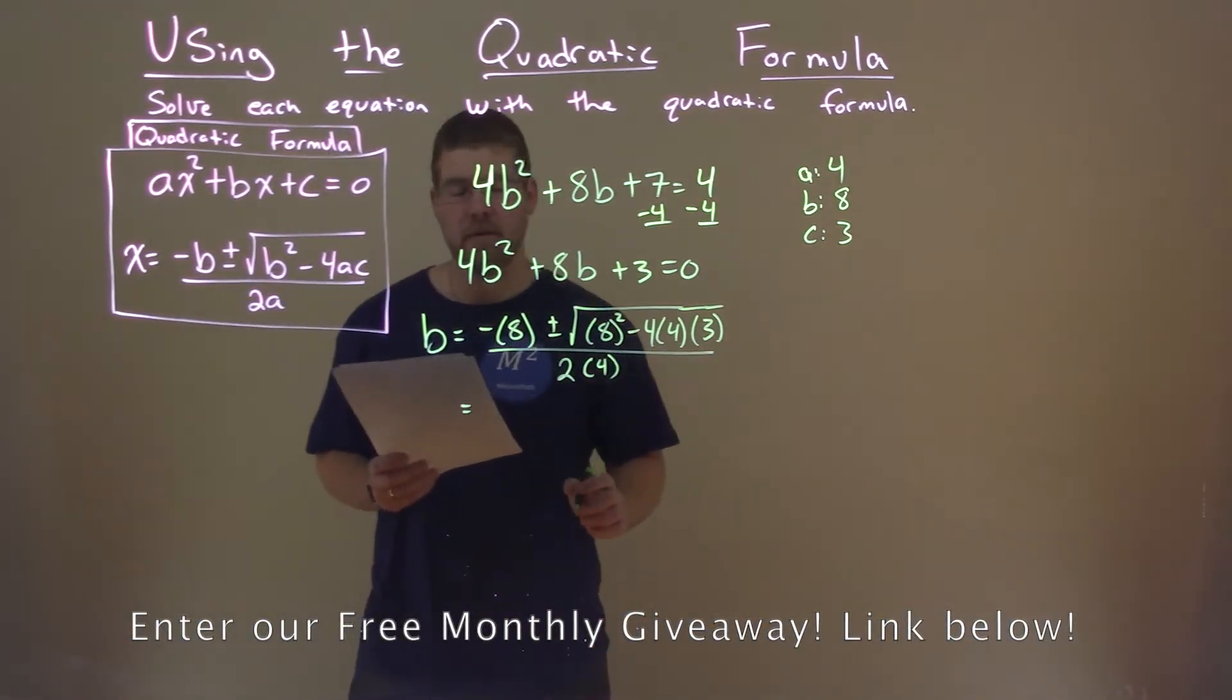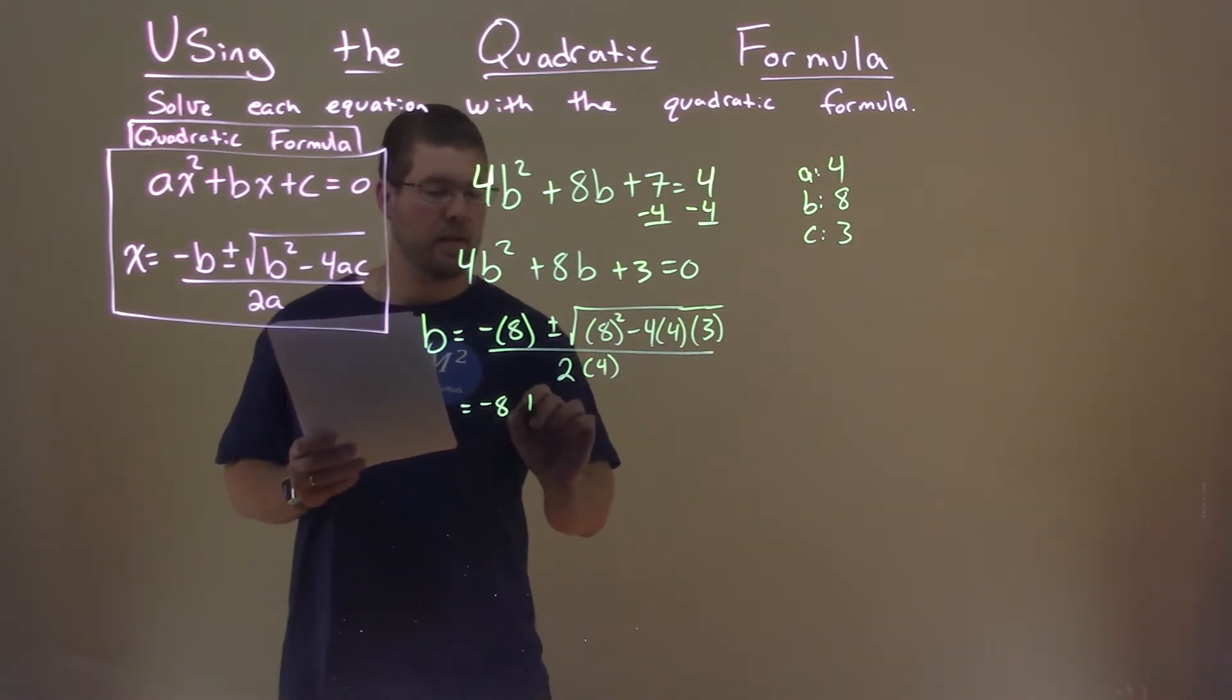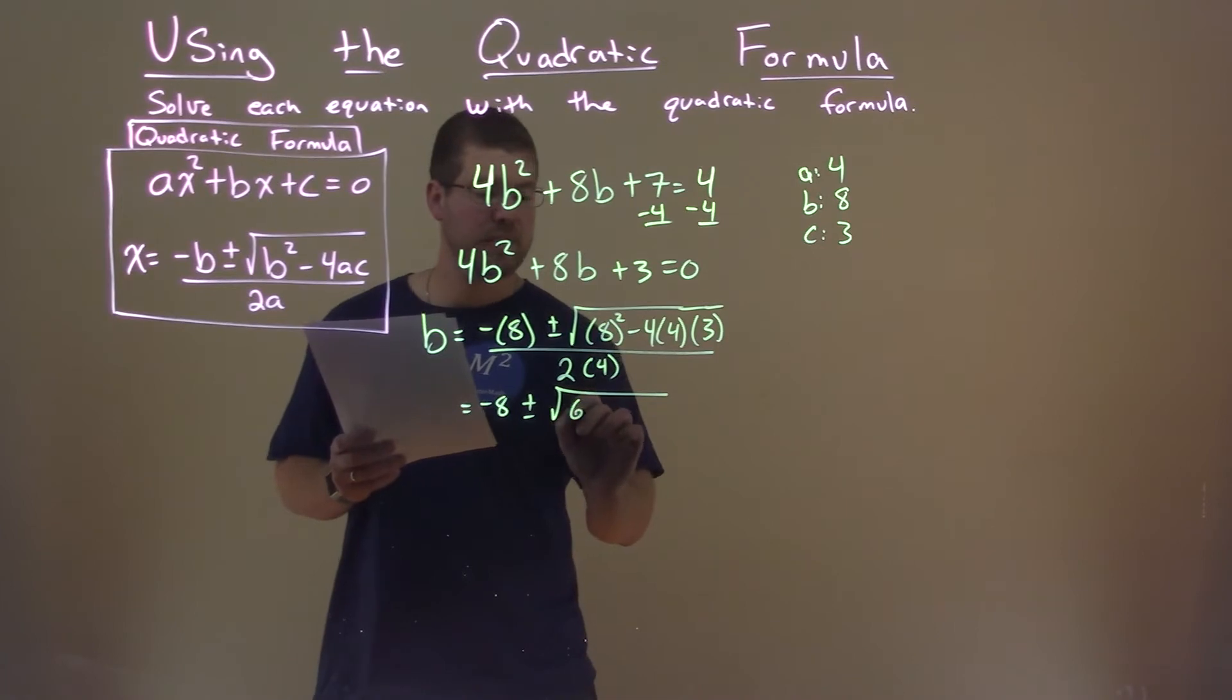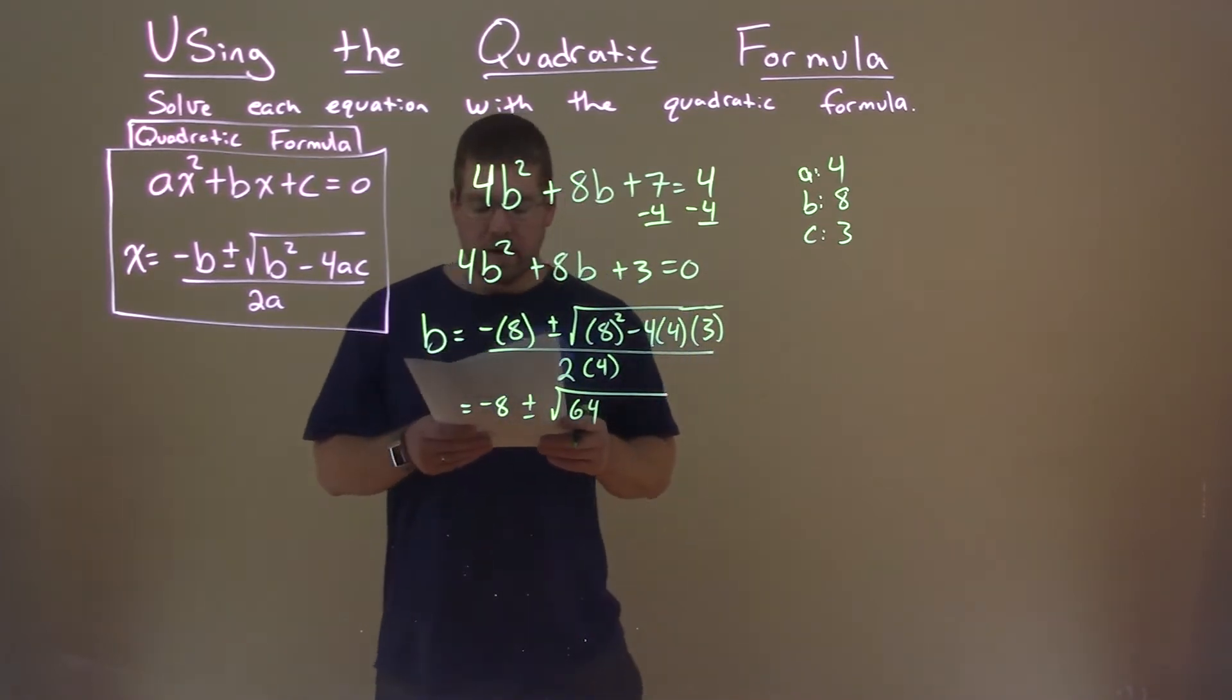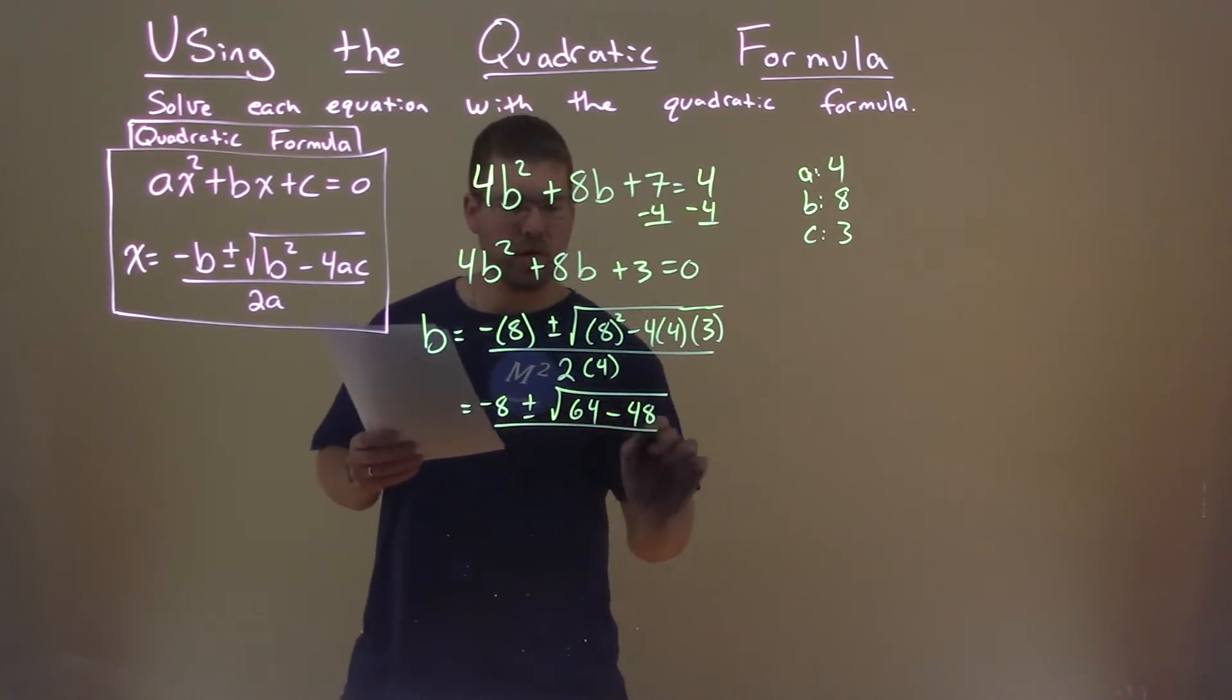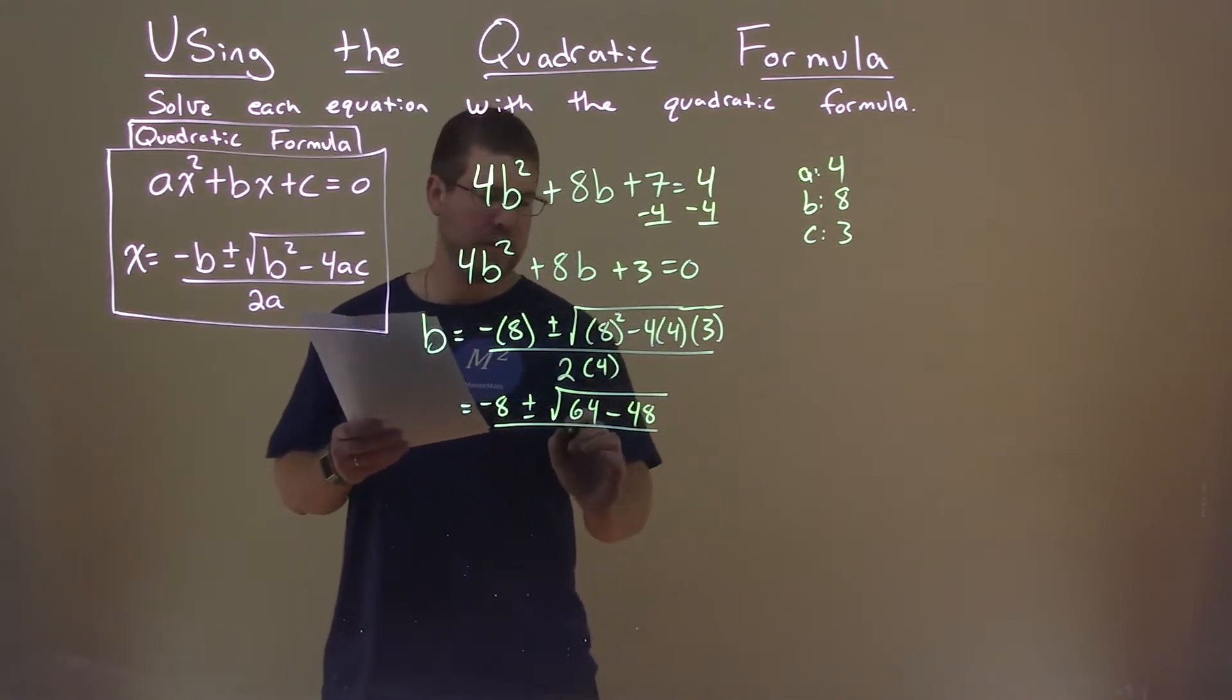And now we're just simplifying this. Negative 8 plus or minus the square root: 8 squared is 64, and 4 times 4 times 3 is 48, all over 2 times 4, which is 8.